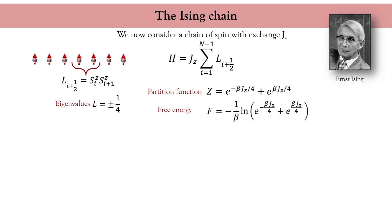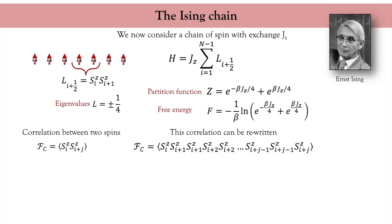I now compute the correlation function between two spins. This function tells me how much the spin momentum at position i+j is correlated to the spin momentum at position i — it should indicate whether there is magnetic order in the system. I rewrite this correlation function by introducing all the spins located between sites i and i+j, noticing that I can regroup the spins two by two and rewrite the correlation function in terms of the operator L_{i+1/2}, where the brackets denote statistical average.